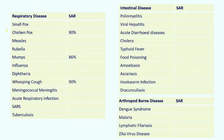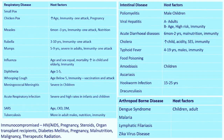Secondary attack rate: chickenpox is 90%; mumps is 86%; whooping cough is 90%. For the rest, secondary attack rate is not mentioned in the textbook.